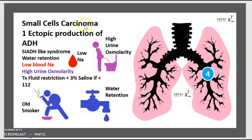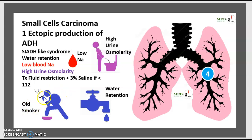Small cell carcinoma with ectopic ADH production is linked to smoking and is more frequent in older smokers. The key consequence is water retention.